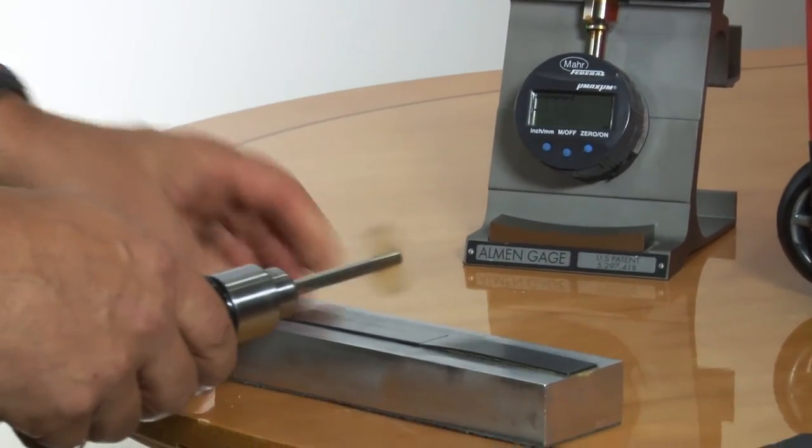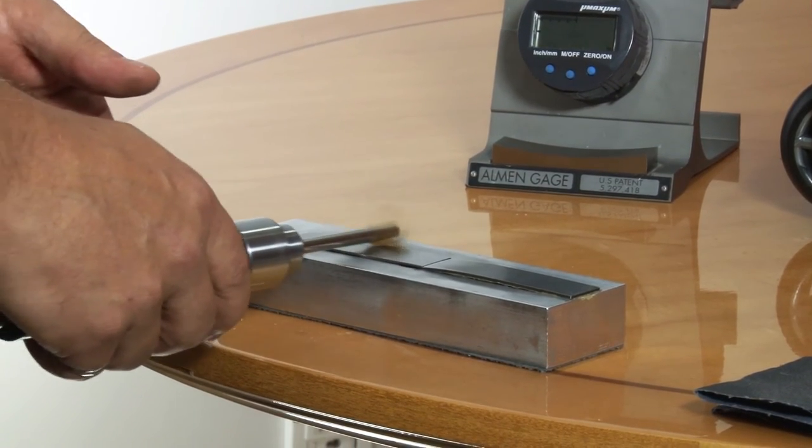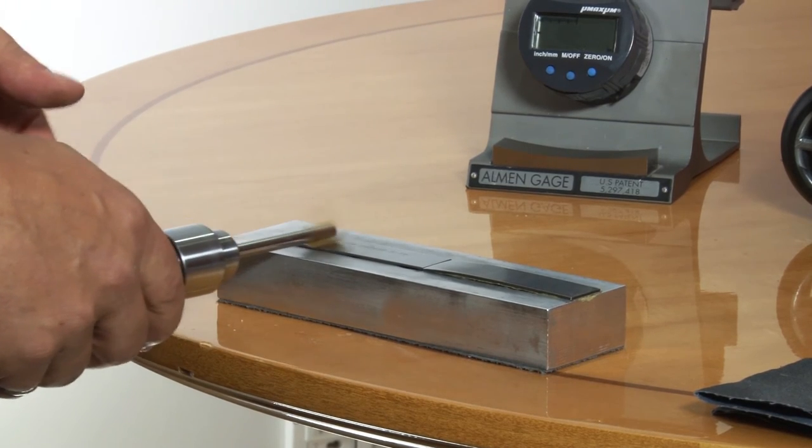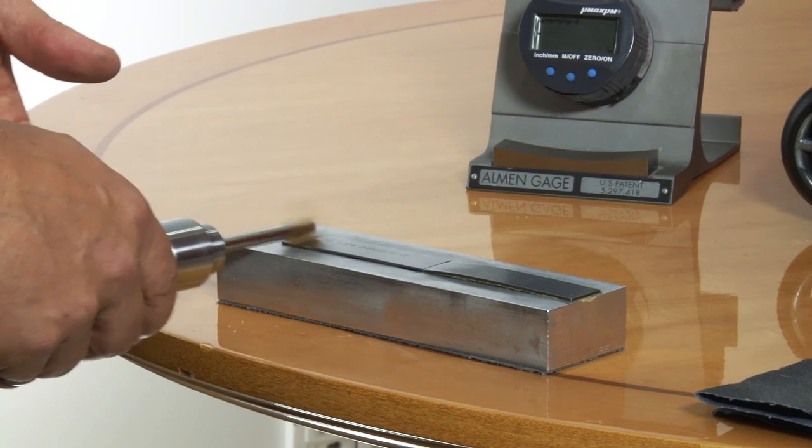When you're flapper peening, you move in an orbital motion on the almond strip. You want to keep your tool nice and perpendicular to the surface that you're flapper peening.